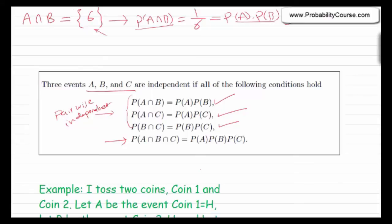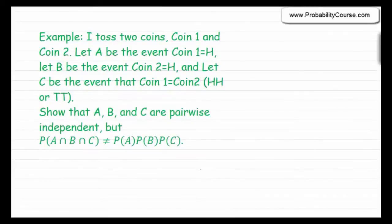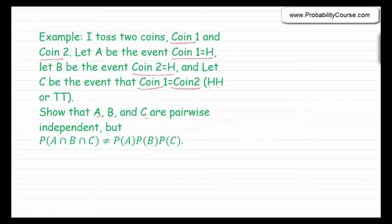Here is an example. I toss two coins, coin 1 and coin 2. Let A be the event that coin 1 results in heads, B be the event that coin 2 results in heads, and C be the event that the outcomes of coin 1 and coin 2 are equal — so C occurs if the result is heads-heads or tails-tails. The question is to show that A, B, and C are pairwise independent, but the probability of A and B and C is not equal to the probability of A times probability of B times probability of C.